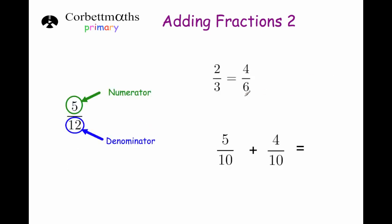Before I go any further, make sure you're aware of these terms: numerator, the number on the top of a fraction, and denominator, the number on the bottom of a fraction. Make sure you're aware of equivalent fractions — if you need to go back to CorporateMathsPrimary.com and watch the video on equivalent fractions, go and do that now. Also make sure you're aware of how to add fractions with the same denominators. For example, five tenths plus four tenths would be nine tenths — if the denominators are the same you can just add the numerators together.